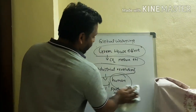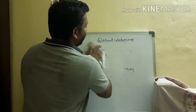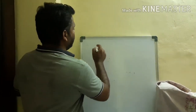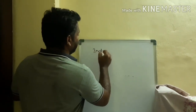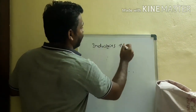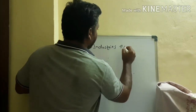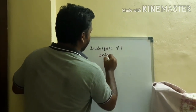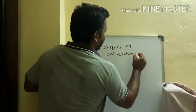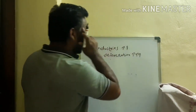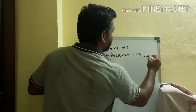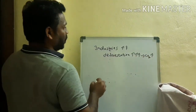In the process of industries, what we have done — to start and increase the industries, we have cut the forest. What we have done is deforestation — more and more deforestation. This deforestation leads to an increase of CO2 in the atmosphere.